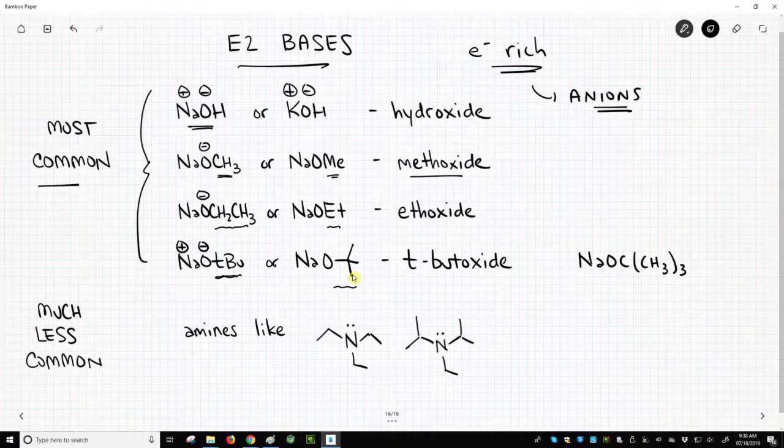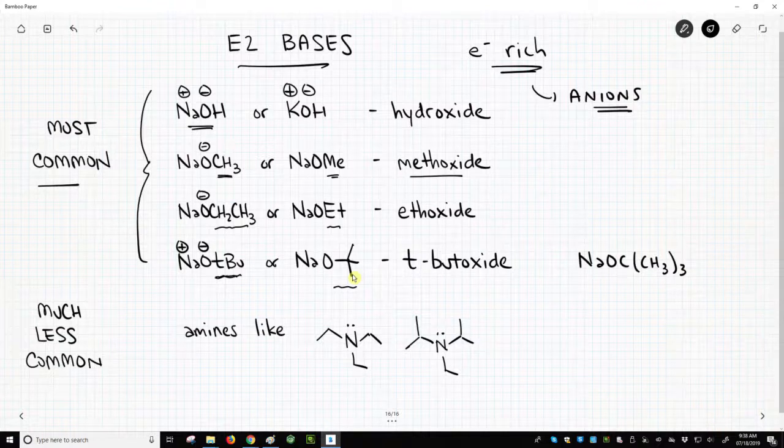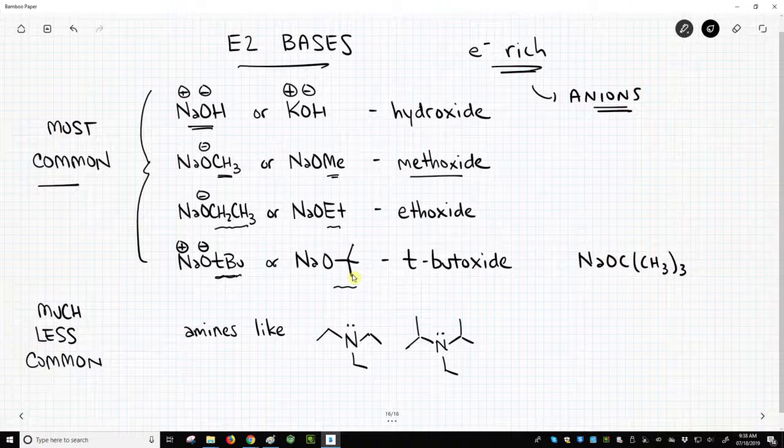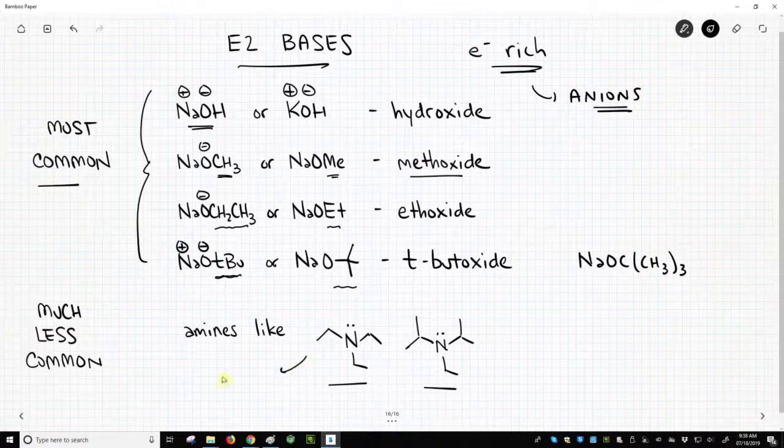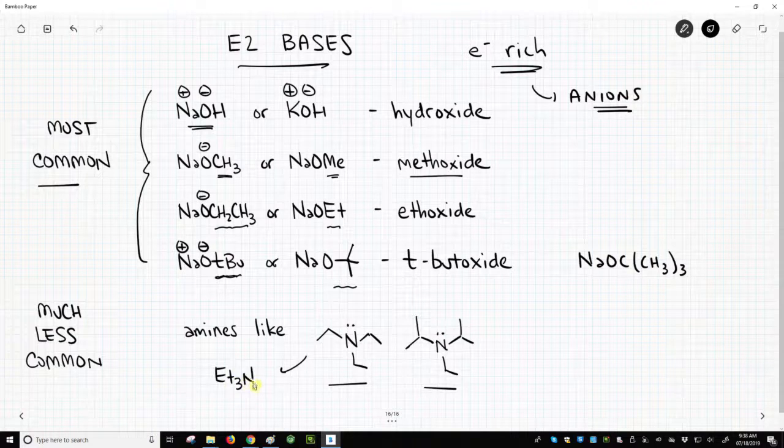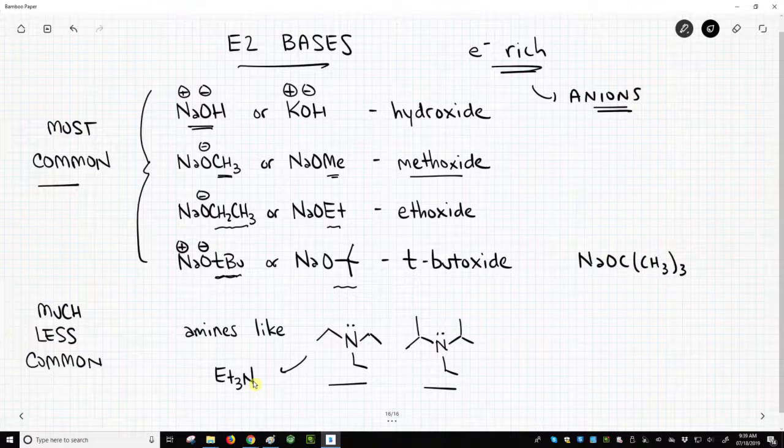Less common, but sometimes encountered, are amine bases. We know ammonia is a base. It's not an anion, but it is electron-rich. That nitrogen has a lone pair. And so these are two common bases you'll encounter. So this base, in particular, people might write it as triethylamine, and you might see that here and there as you encounter different E2 reactions.